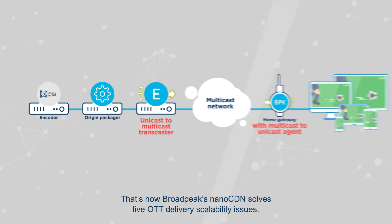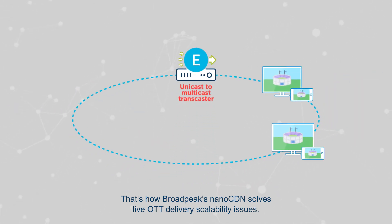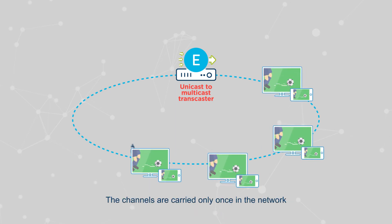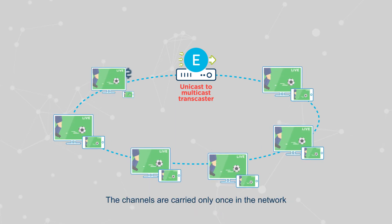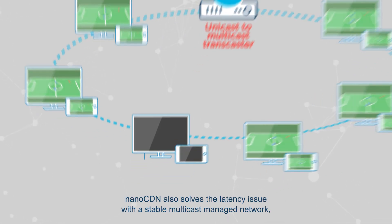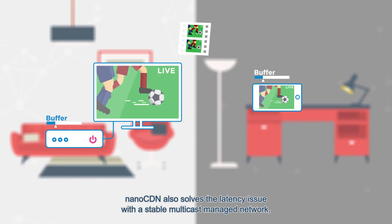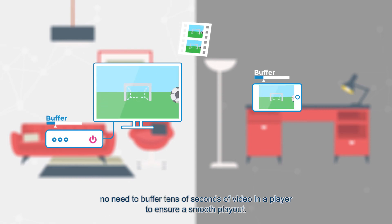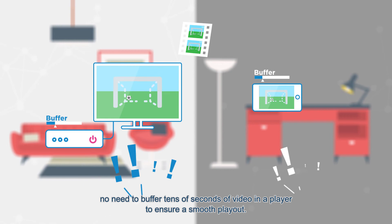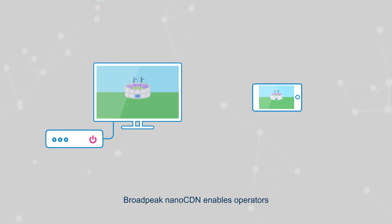That's how Broad Peak's nano CDN solves live OTT delivery scalability issues: the channels are carried only once in the network regardless of the number of viewers involved. Nano CDN also solves the latency issue — with a stable multicast managed network, there is no need to buffer tens of seconds of video in a player to ensure a smooth playout.